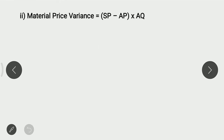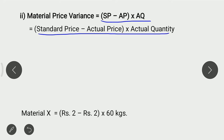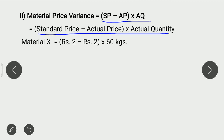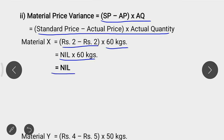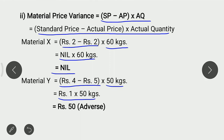Second variance is Material Price Variance (MPV) = (SP − AP) × AQ, i.e. Standard Price minus Actual Price, multiplied by Actual Quantity. For Material X: Standard Price 2, Actual Price 2, so (2 − 2) × 60 = Nil. MPV of Material X is Nil. For Material Y: Standard Price 4, Actual Price 5, Actual Quantity 50: (4 − 5) × 50 = Rs. 50 Adverse. MPV of Material Y is Rs. 50 Adverse.